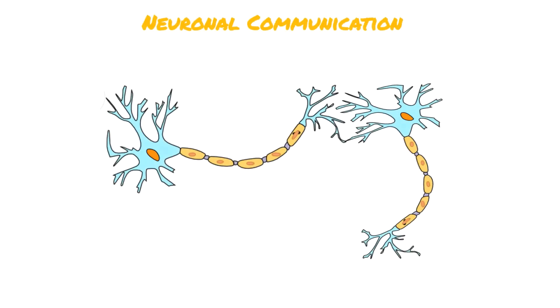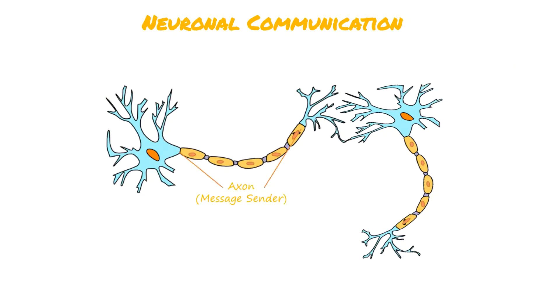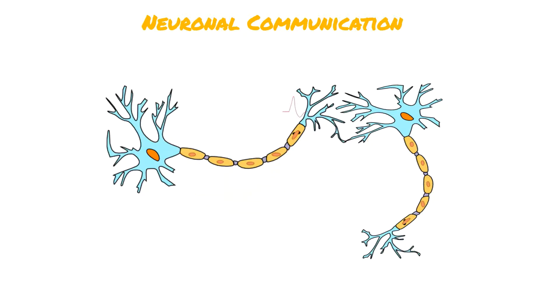Now that we've covered the essentials of electricity, we can move on to how neurons use it to communicate with each other. Neurons send electrical signals using a specialized output fiber known as an axon, and receive messages at the branchy structures of their cell body known as dendrites. These electrical signals, also called action potentials, occur many times at different points along the axon, each one triggering the next in a manner that resembles dominoes until the end of the axon is reached.